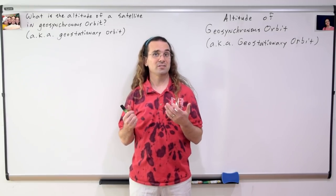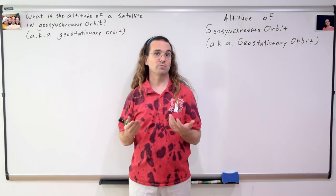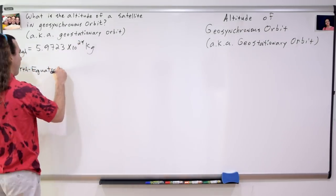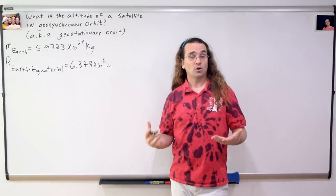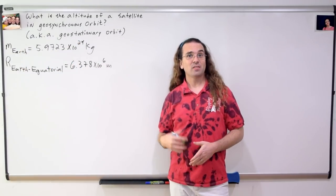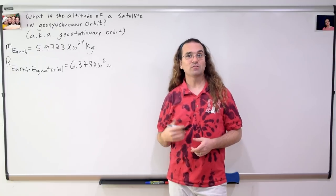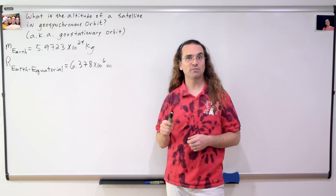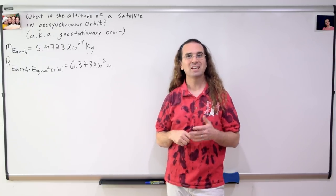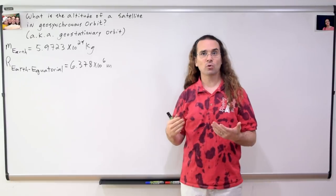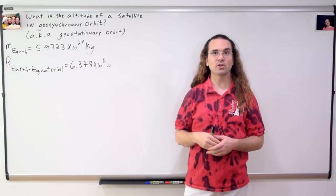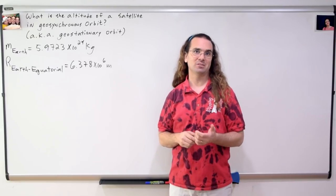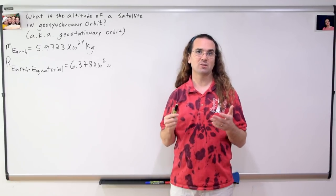In order to answer this question, we need some known values. According to NASA, the mass of the Earth is 5.9723 times 10 to the 24th kilograms, and the equatorial radius of the Earth is 6.378 times 10 to the 6th meters.